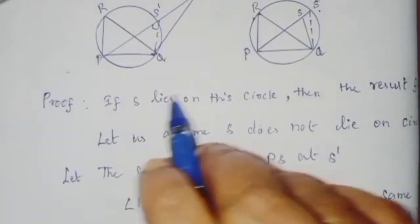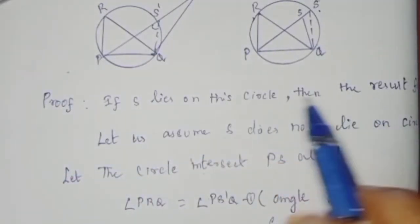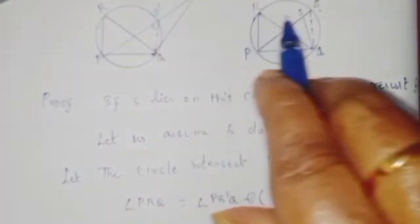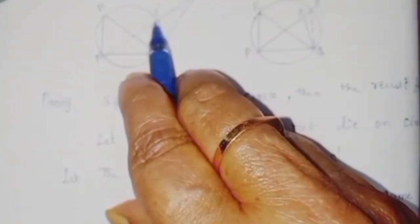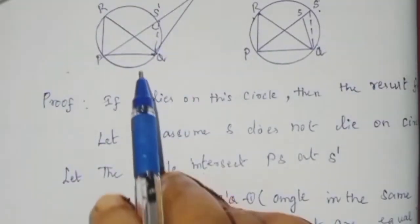If S lies on the circle then the result follows — that the point S is in this circle. That is what we will prove.